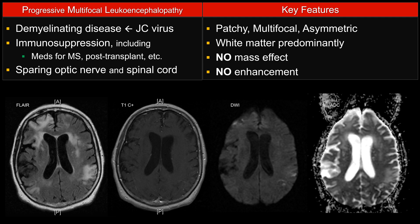In terms of trying to differentiate between progression of MS versus PML, one helpful hint is that PML tends not to affect the optic nerve or spinal cord, whereas MS does like to involve the optic nerve or spinal cord.